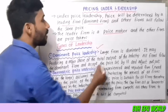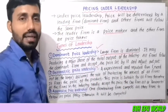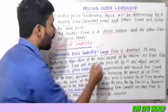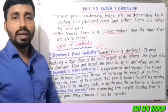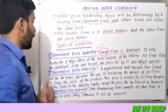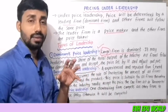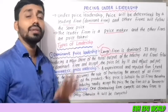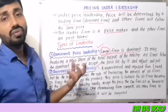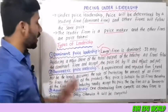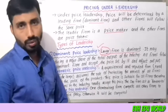In dominant price leadership, a large firm is dominant. It may be producing a major share of output in the industry. If other firms have low production, they follow the dominant firm. All firms follow the dominant firm, accept the price set by it, and adjust their output accordingly.